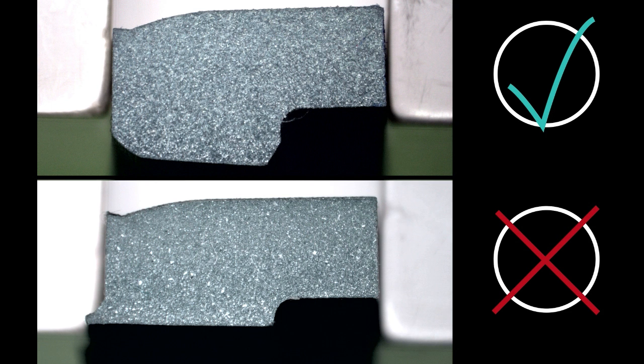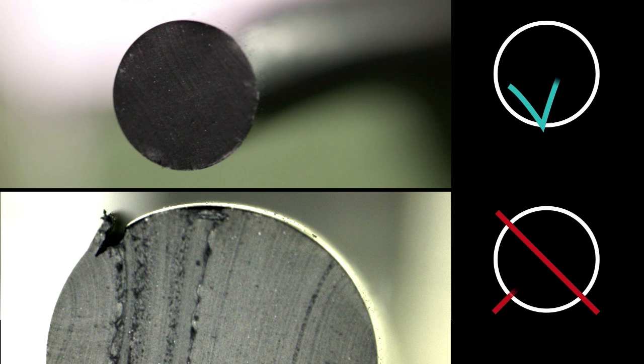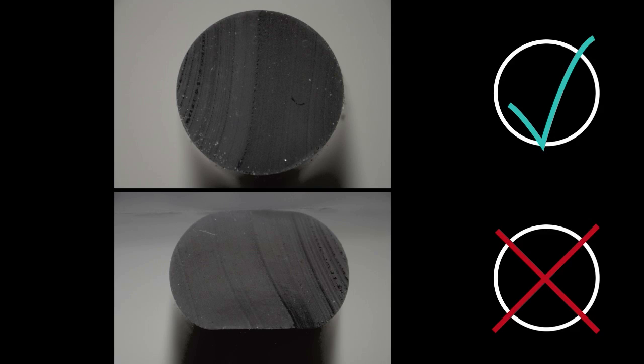Never reinstall a used seal or a pre-tensioning element, because there may be defects or geometrical changes you can't see. This will result in a loss of pre-tension or cause the seal to fail.